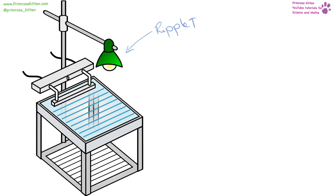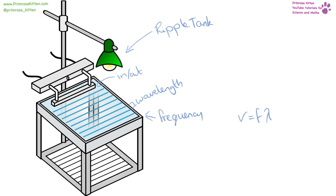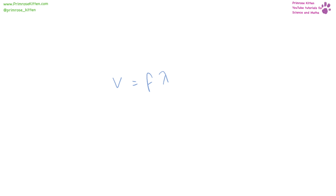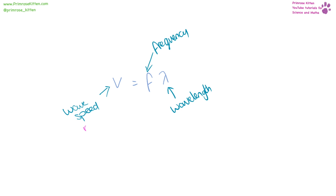If we want to measure the speed of a wave, we can use a ripple tank. This will go in and out of the water, creating waves. From this we can measure wavelength, and also look at how many waves pass a certain point in a second to get frequency. Then we can use our equation to work out the speed of the wave: V equals F times lambda. To work out wave speed, we take the frequency and multiply it by the wavelength. Our units of speed are metres per second, frequency is in hertz (capital H, lowercase z), and wavelength is in metres.